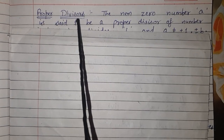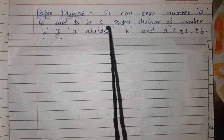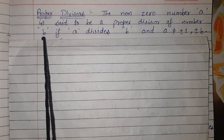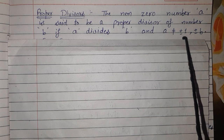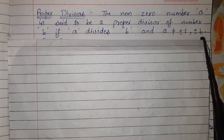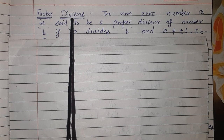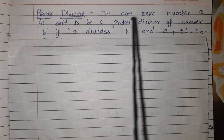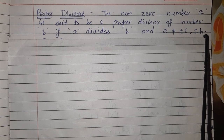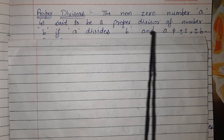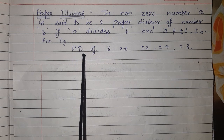Proper divisors: a non-zero number A is said to be a proper divisor of number B if A divides B, and A is not equal to ±1 or ±B. Dosto, definition kya raha hai — proper divisor: hum kisi bhi number ko kisi doosre number ka proper divisor kab kahenge jab pehla number doosre number ko bhag karta ho, aur pehla number na to ±1 hona chahiye aur na hi same number ±B hona chahiye.